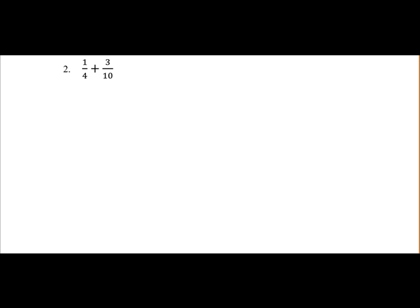On to our second example, we have 1 over 4 plus 3 over 10. Again, they have different denominators, 4 and 10, so we need to find the lowest common denominator.